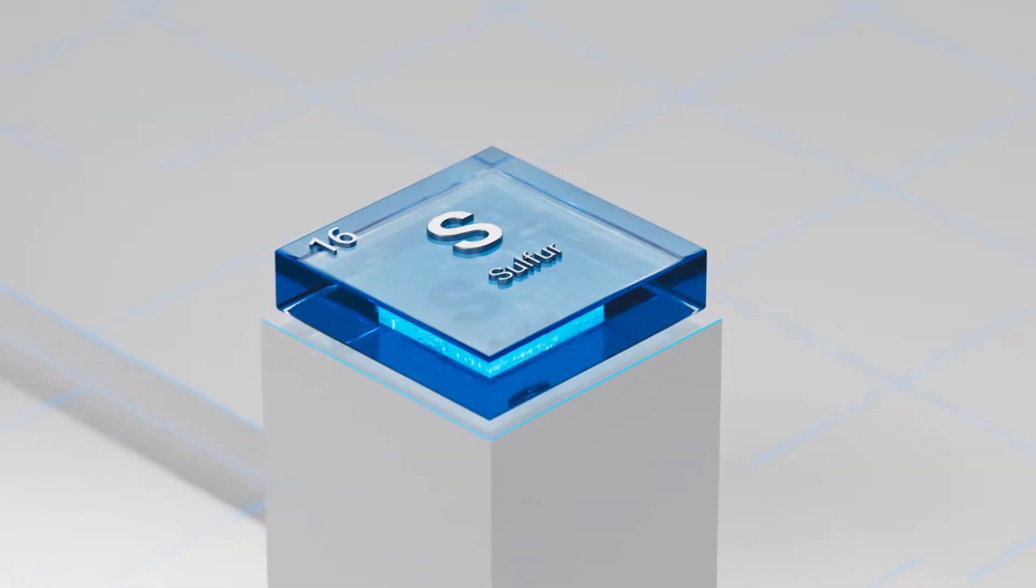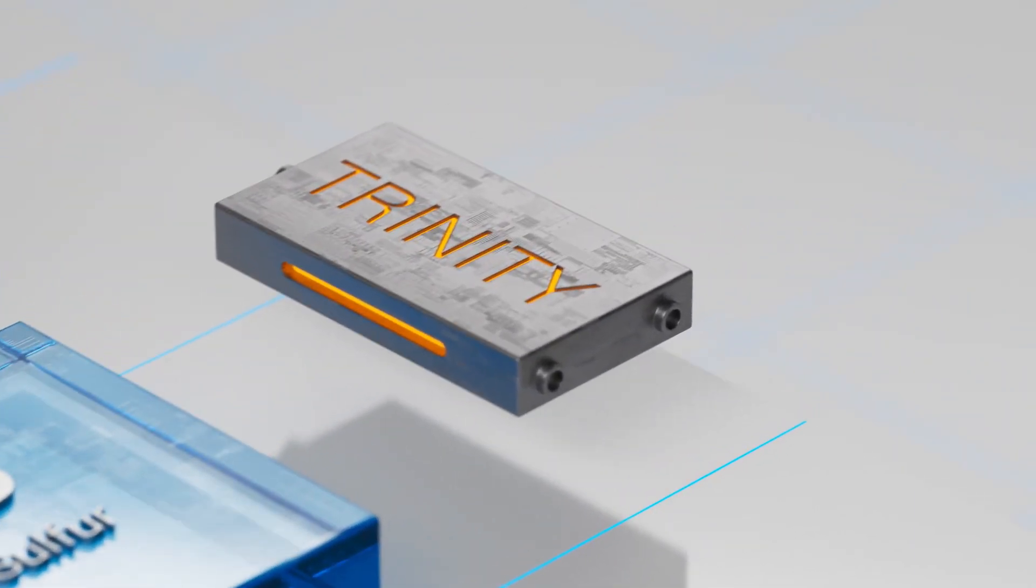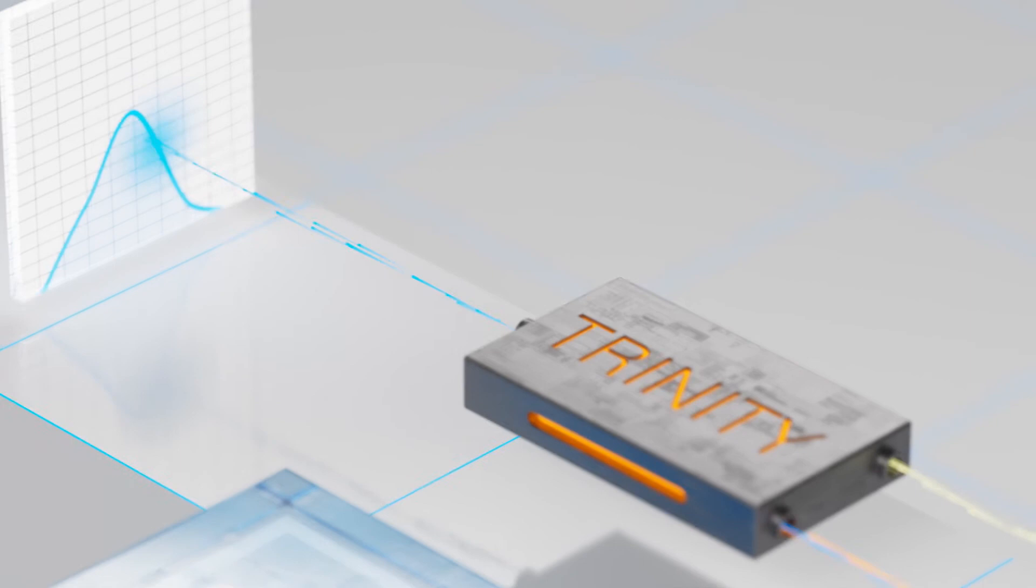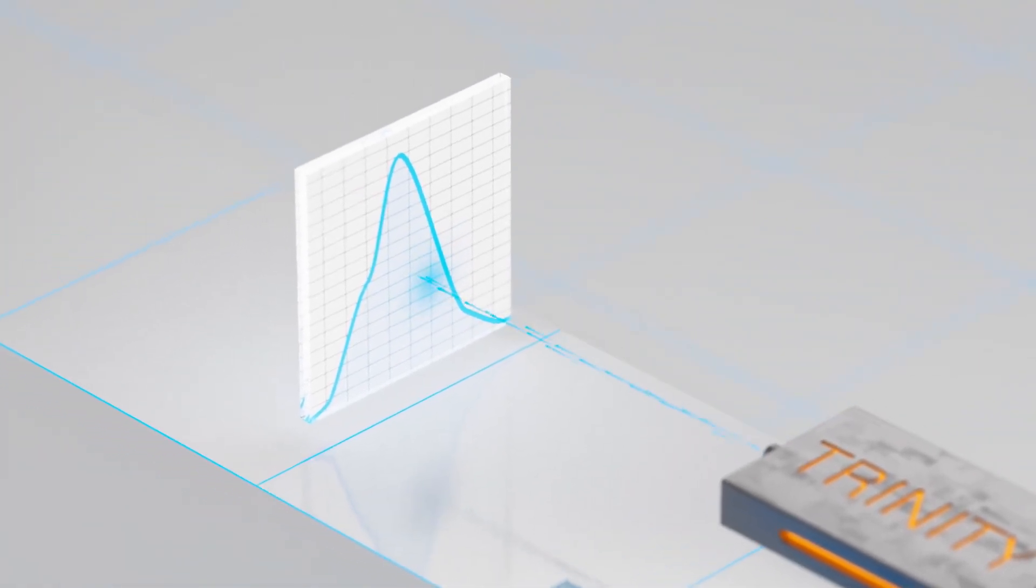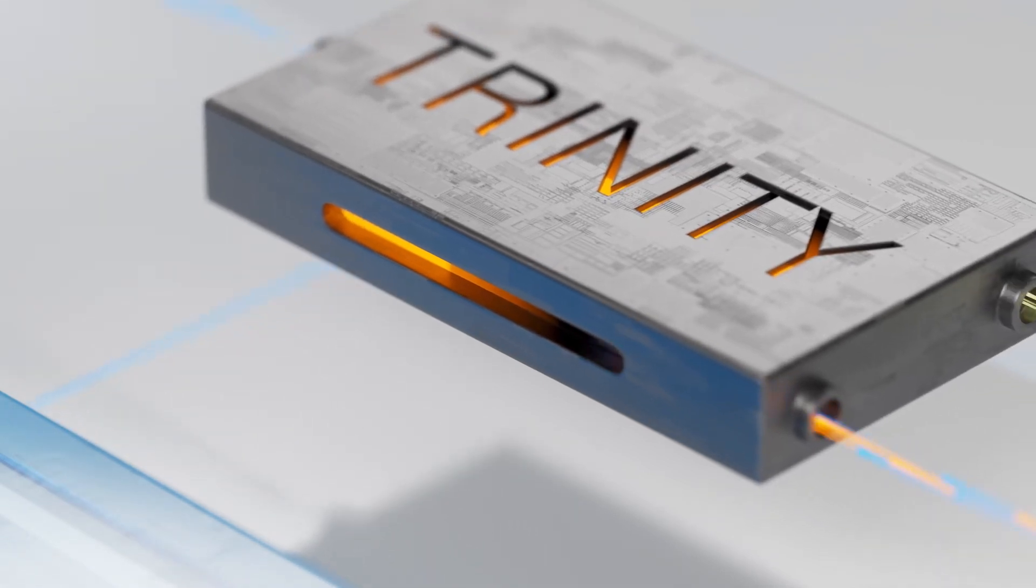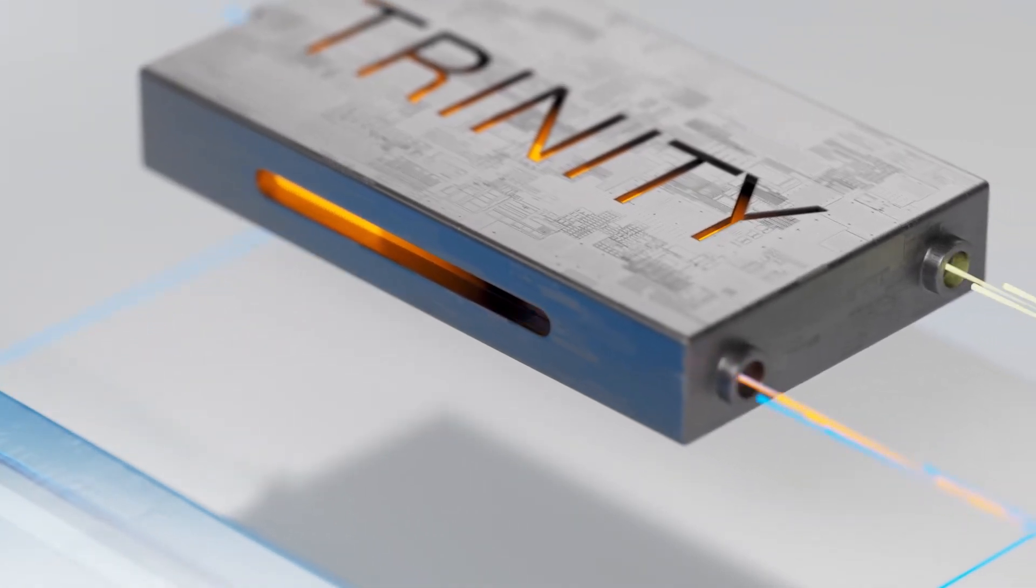For total sulfur analysis, the sophisticated nitrogen oxide elimination design of the Trinity module enables the Nexus to report the most accurate total sulfur data every time, ensuring Tier 3 compliance. The Trinity's adjustable power level allows the Nexus to maintain peak effectiveness while lowering operational costs.